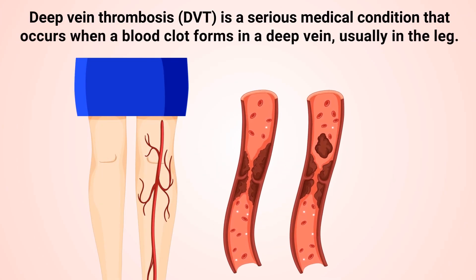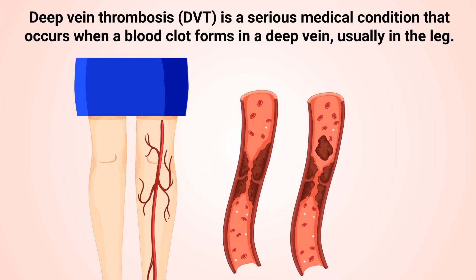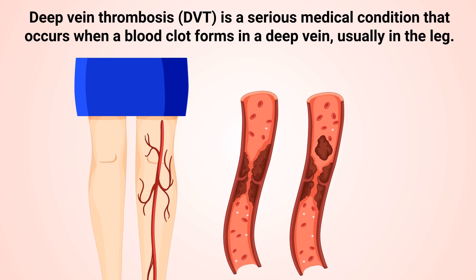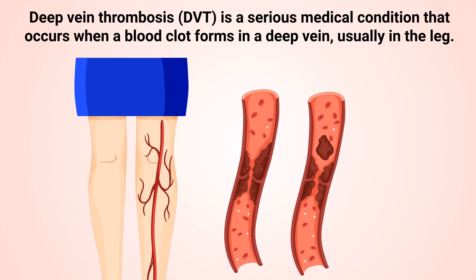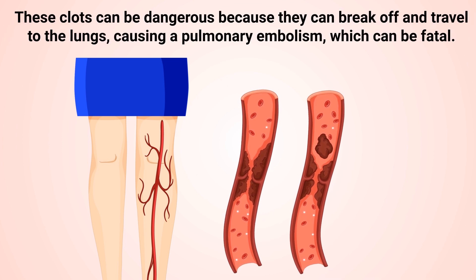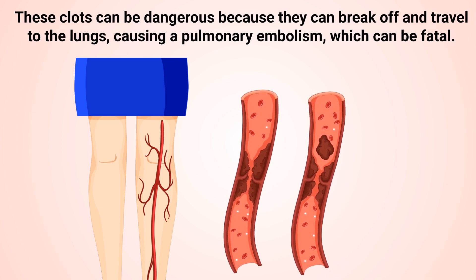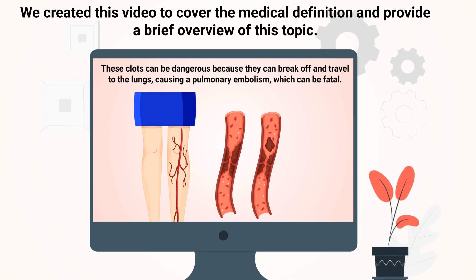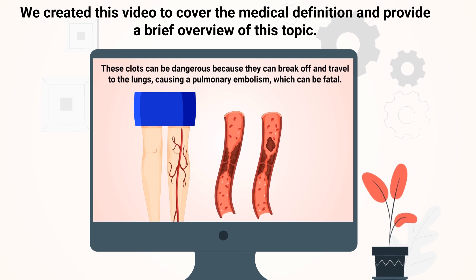Deep vein thrombosis, or DVT, is a serious medical condition that occurs when a blood clot forms in a deep vein, usually in the legs. These clots can be dangerous because they can break off and travel to the lungs, causing a pulmonary embolism, which can be fatal.